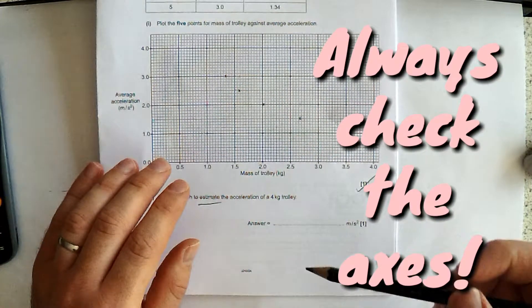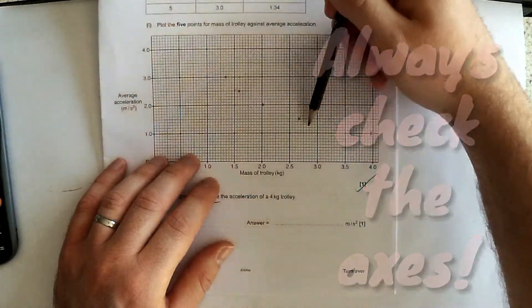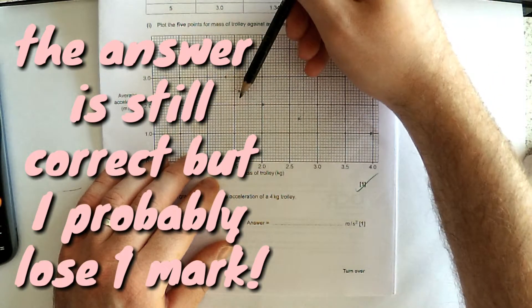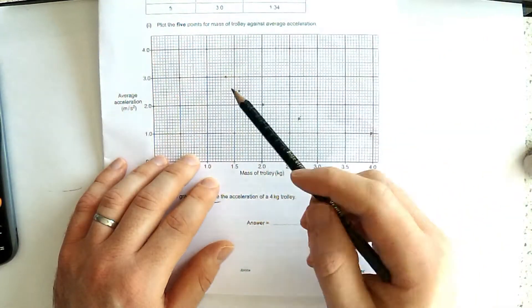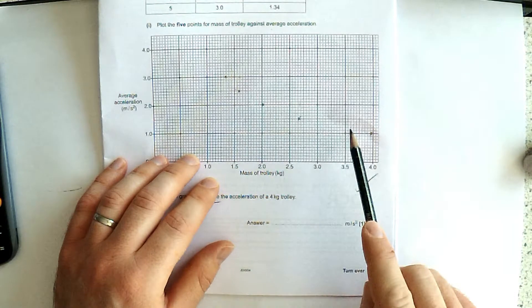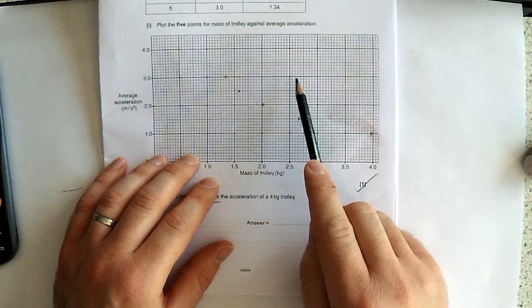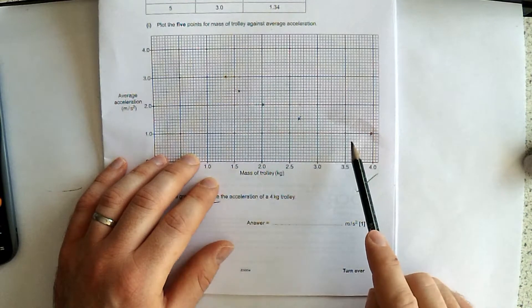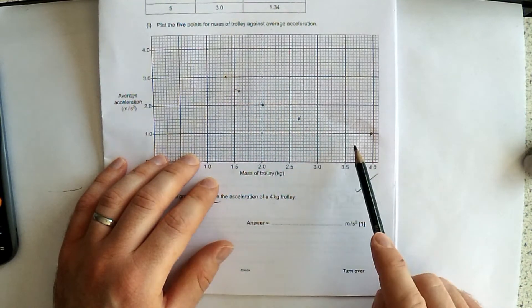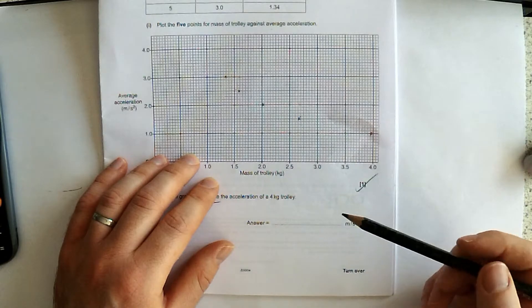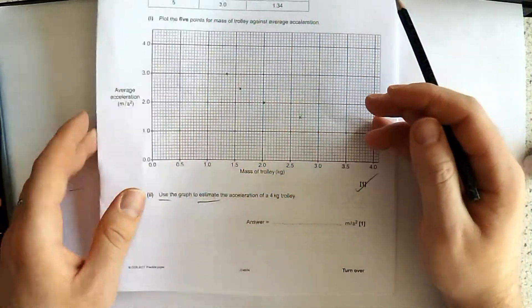But there is no possible straight line of best fit. If I run it through like this, then this one's above it, this one's above it, and these are all below it. And whenever you have points above it at either end and points below it in the middle, or the opposite way around, points above the line in the middle and below it at either end, you know it can't be a straight line that you can fit.